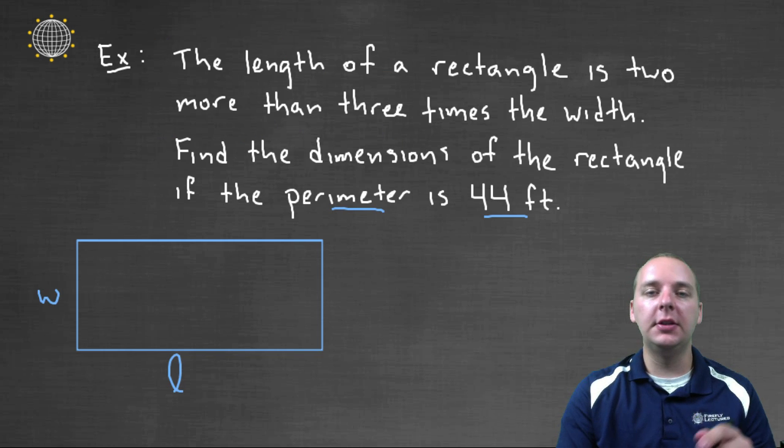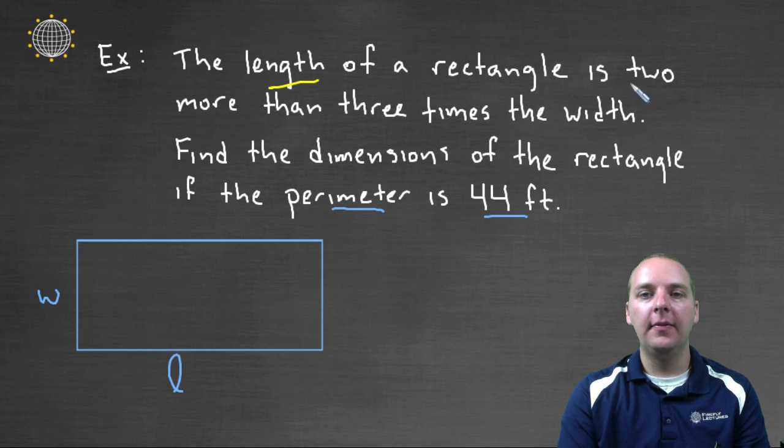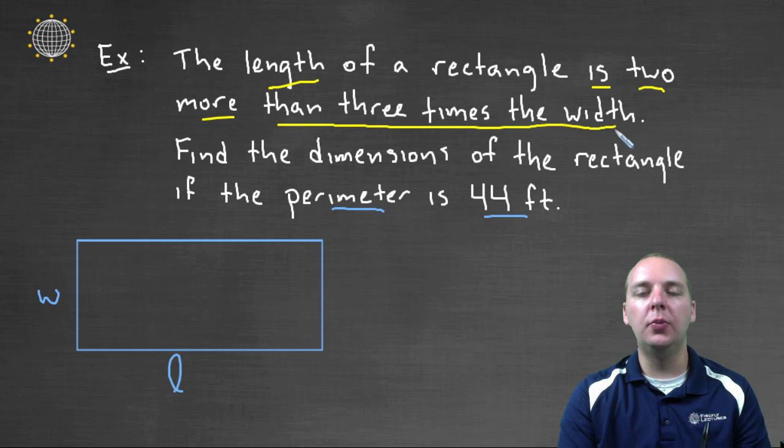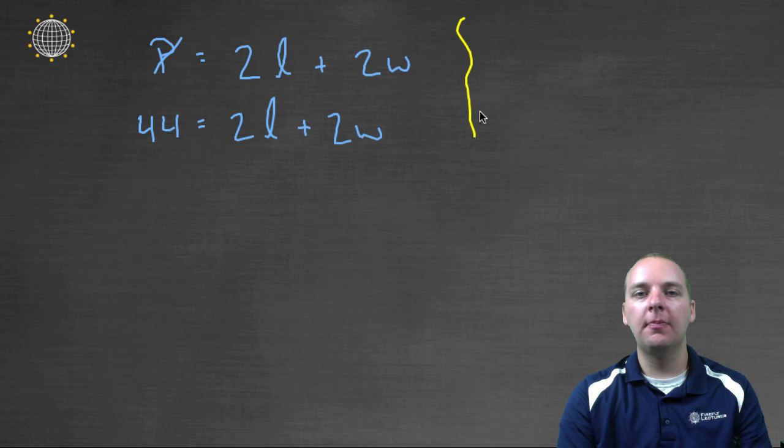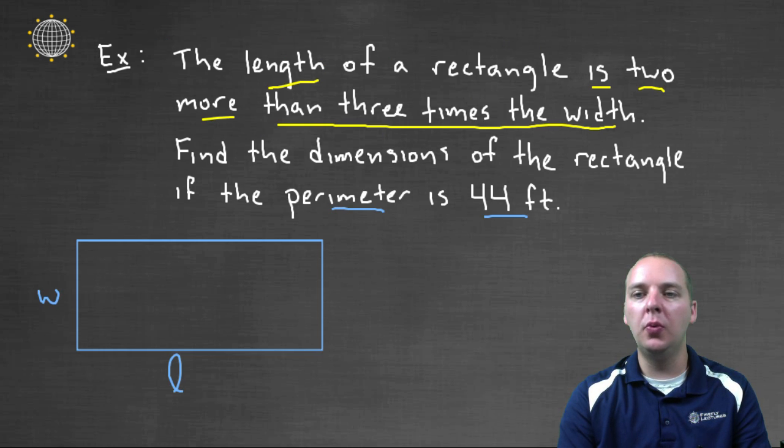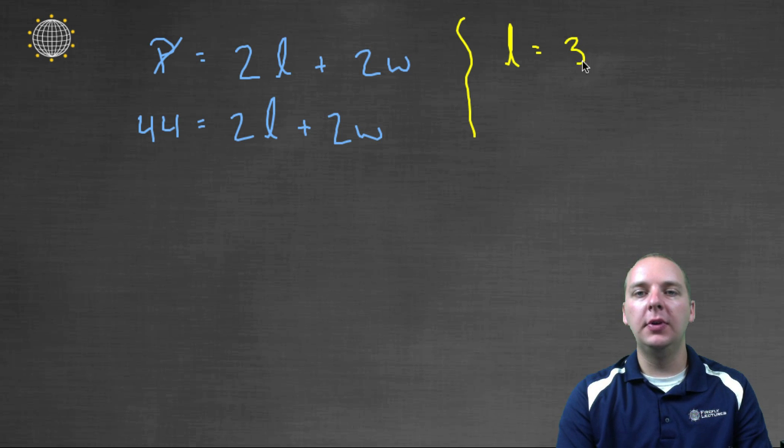But now, notice they also give us some information that relates the length and the width to each other. For example, they say that the length is two more than three times the width. So whatever the width is, I think it's fair to say that the length is going to be, what did it say, it said two more than three times the width. So if we take three times the width and we add two to it, that should be the same as your length.